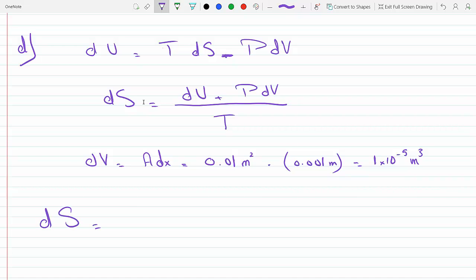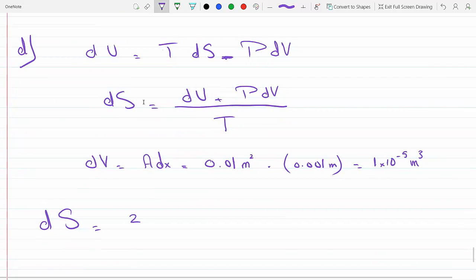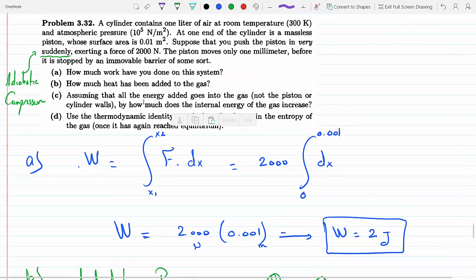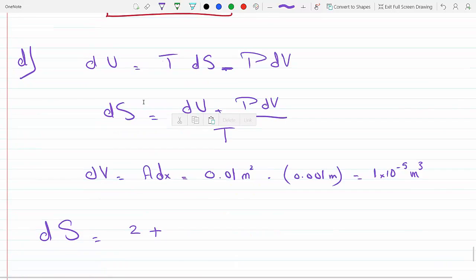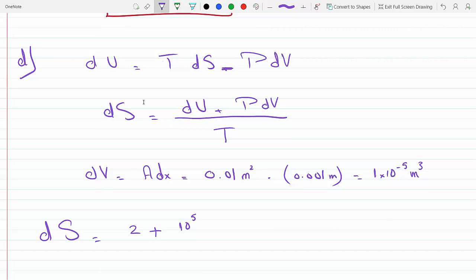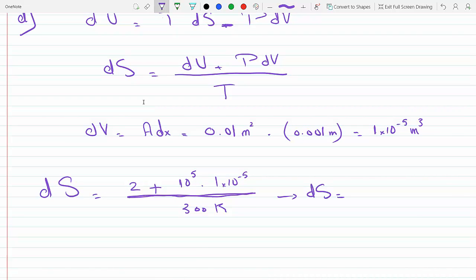Now plugging this in to find the change in entropy, we will get dU, which is 2 joules, plus pressure - the pressure is just the atmospheric pressure, which is 10 to the 5 Newtons per meter squared - times dV, which will give us Newton-meters, which is joules: 1 times 10 to the minus 5. All divided by the temperature, assuming that there hasn't been a change in the temperature before and after the compression, which is 300 Kelvin. And plugging this in, we would get the change in entropy to be, of course, joules per Kelvin, because here on top we have joules and in the denominator we have Kelvin.